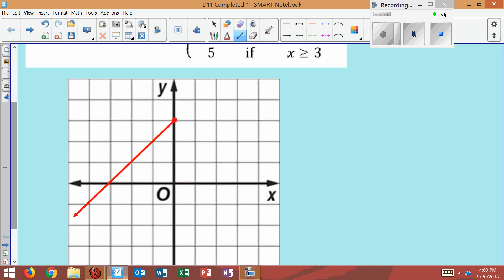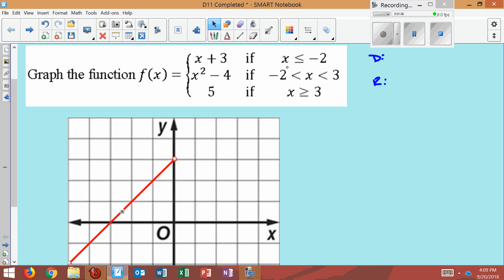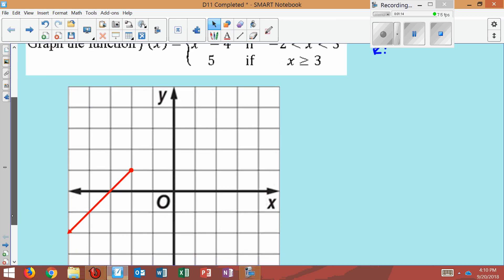Now the thing is, because the graph, this says here that x is less than or equal to negative 2, we need to have this at the x value of negative 2, which is right there. So that's how my graph will look for that part.